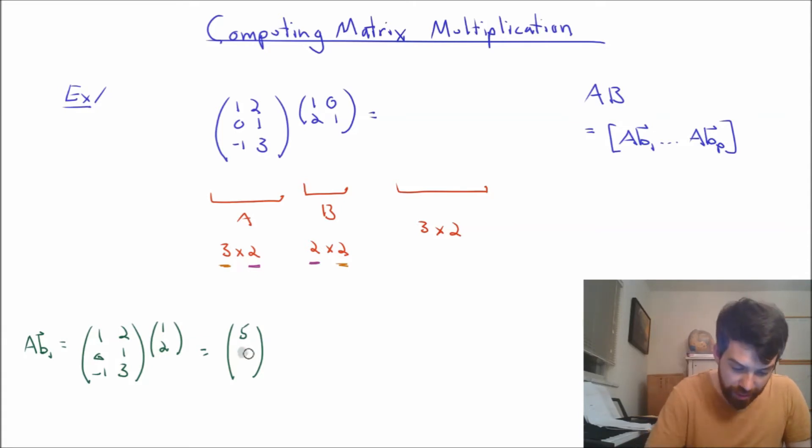And then for the second one, if I want to get this value here, I look at the second row over here, and I look at the column as before. And doing that is going to give me 0 times 1 plus 1 times 2 is going to be 2.